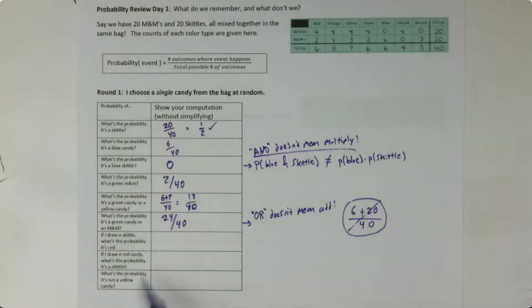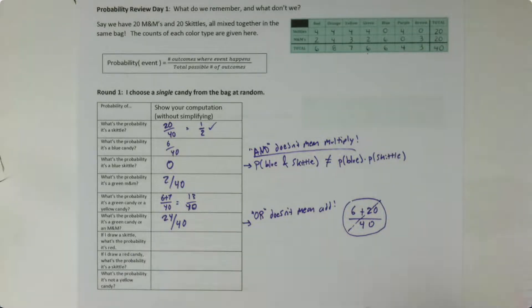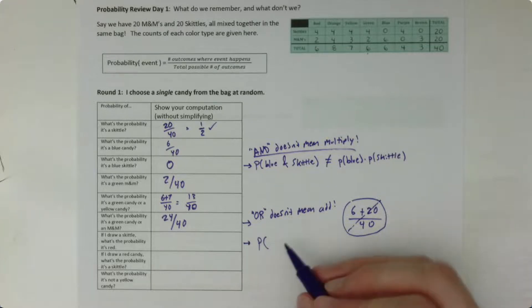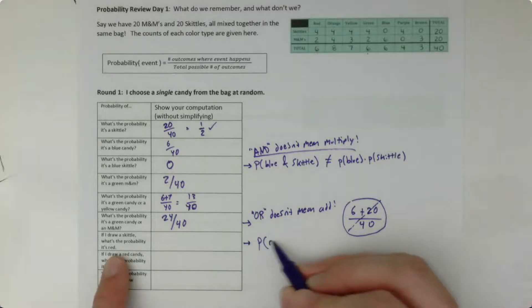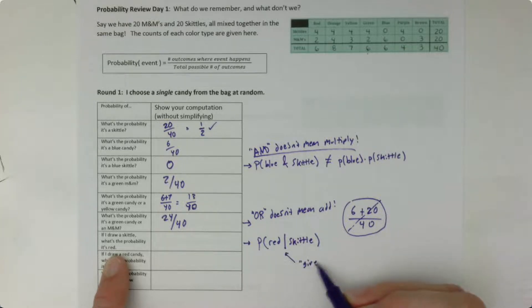Okay, for this next problem, I just wanted to show you some notation that you might not have seen. So here it says if I draw a Skittle, what's the probability that it's red? So I'm not just drawing any old candy. I'm drawing a candy, but I already know that it's a Skittle. So the way that you notate this is you would say, what's the probability that the candy is red? And you draw a vertical bar and then Skittle. And what the vertical bar means is the word given.